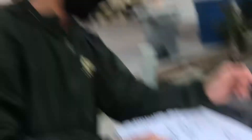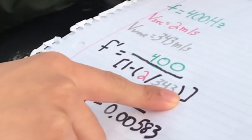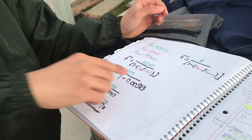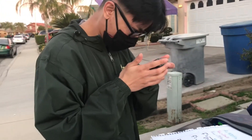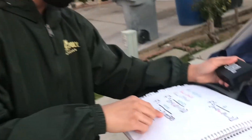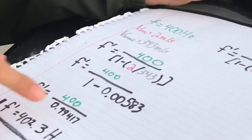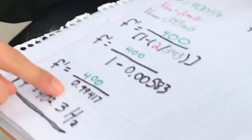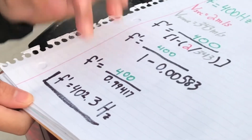So what we did was plug every value in. We even color-coded it for you guys because it'll be more cool. Anyways, we got 400 divided by 1 minus parentheses 2 divided by 343. I did this with my handy dandy calculator — 2 divided by 343 gives 0.00583. Then 1 minus that gives 0.99417. Then 400 divided by that gives a frequency of 402.3 Hz.